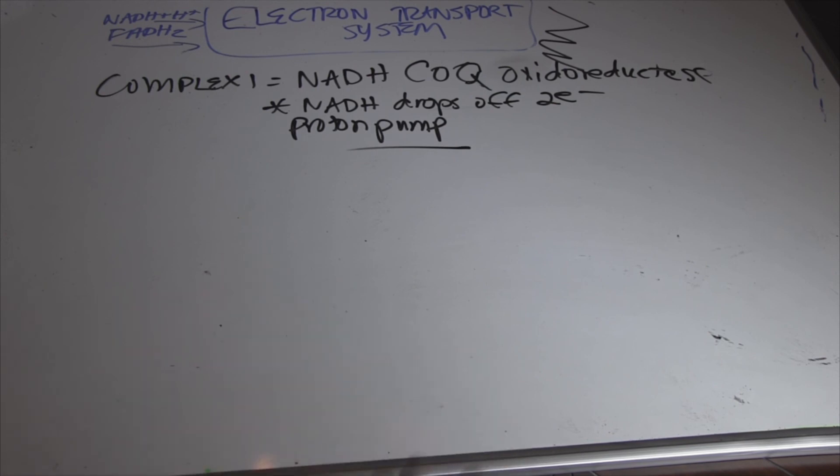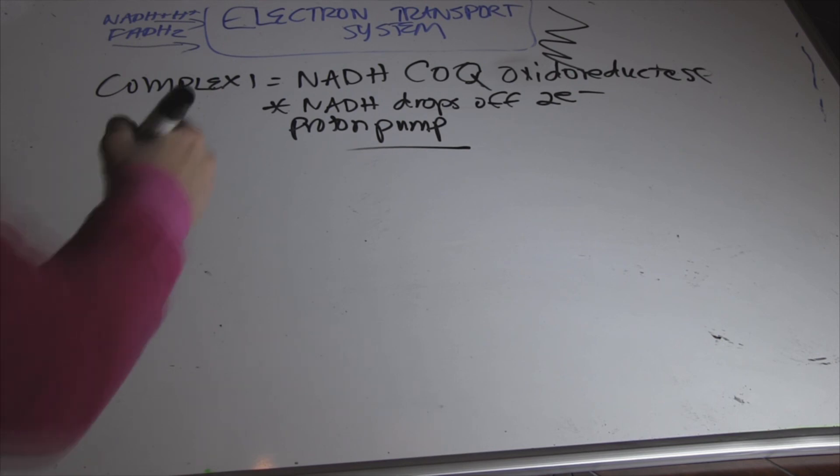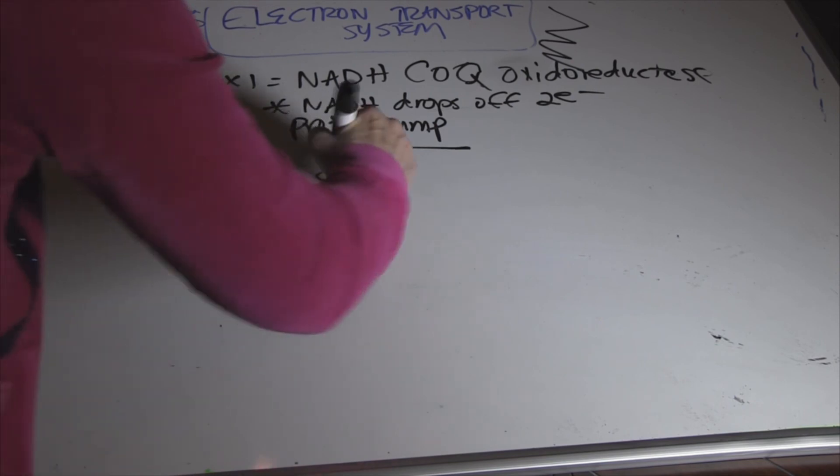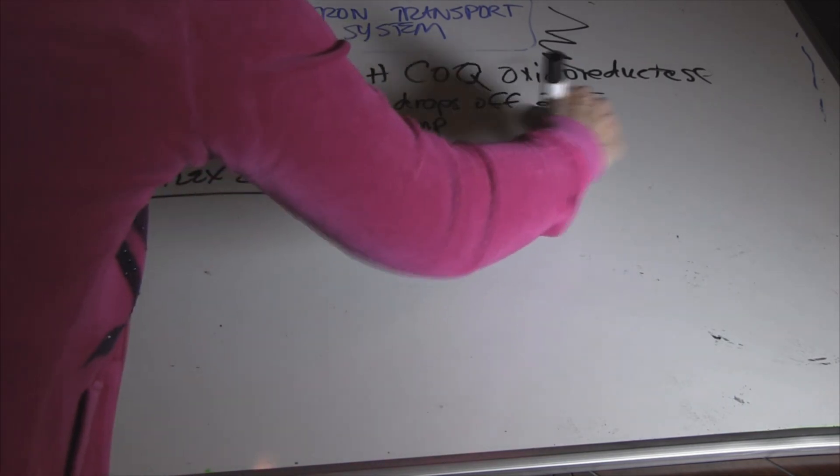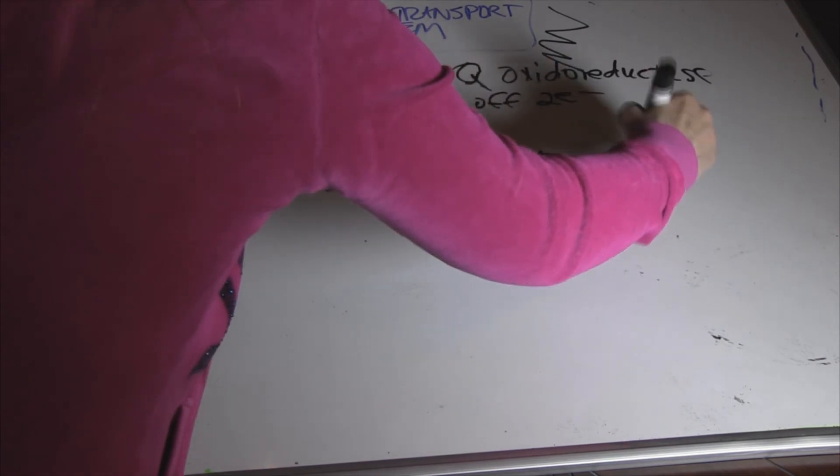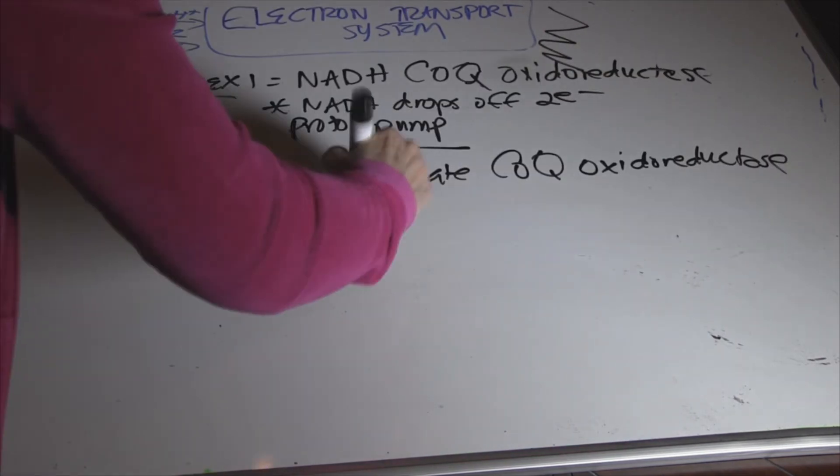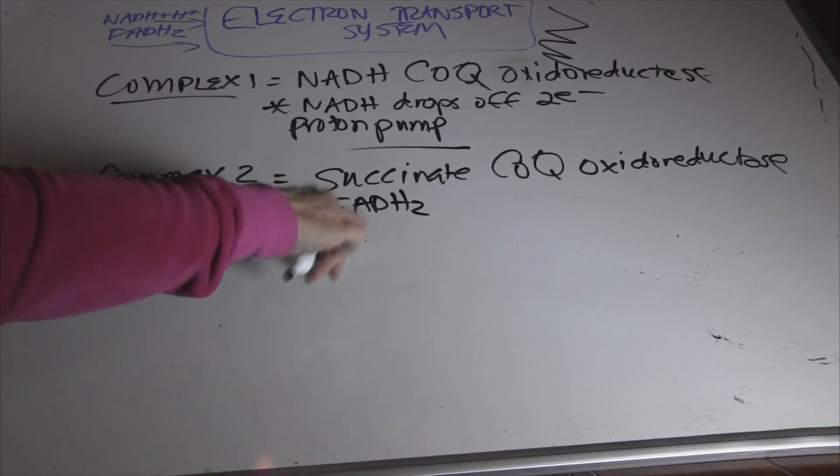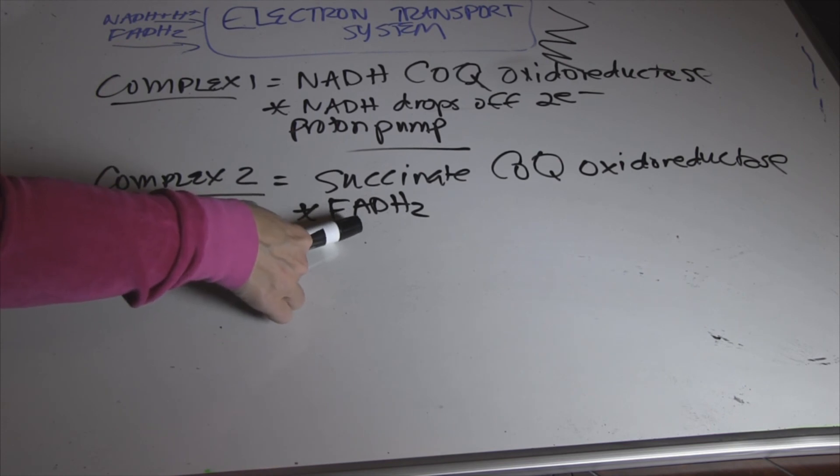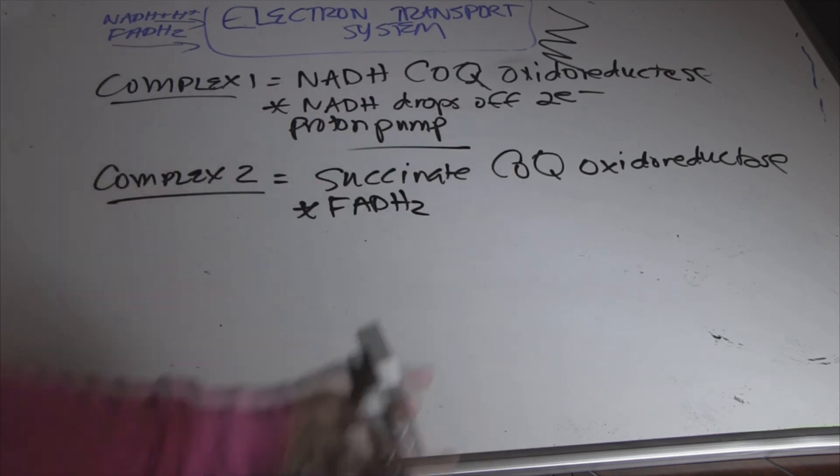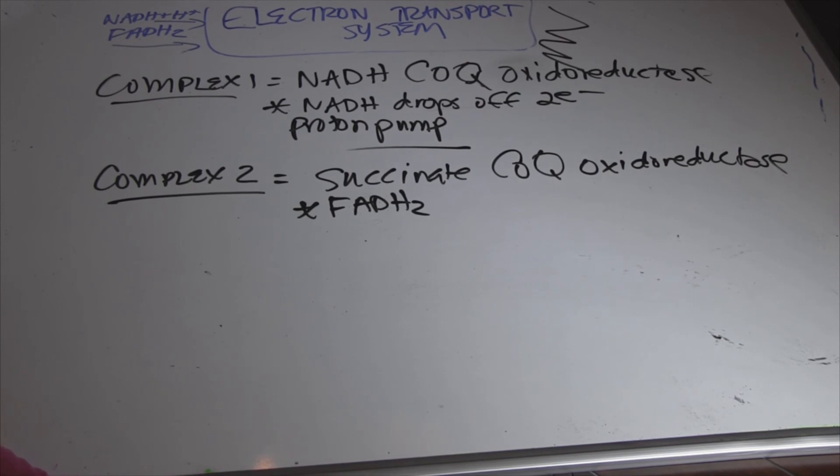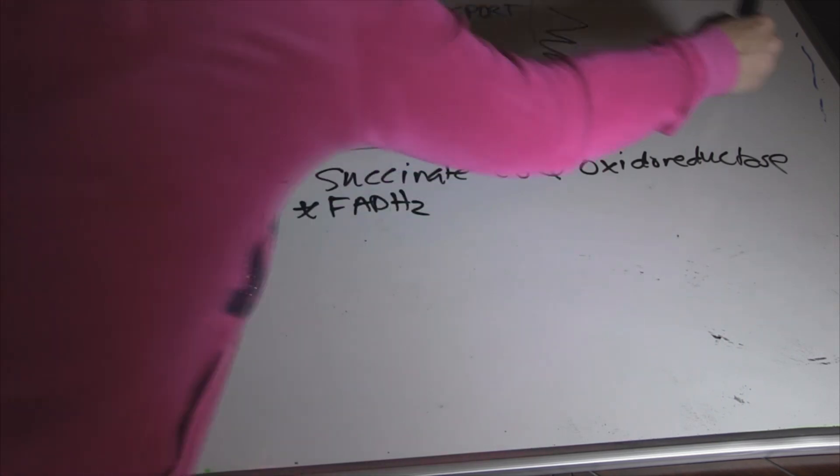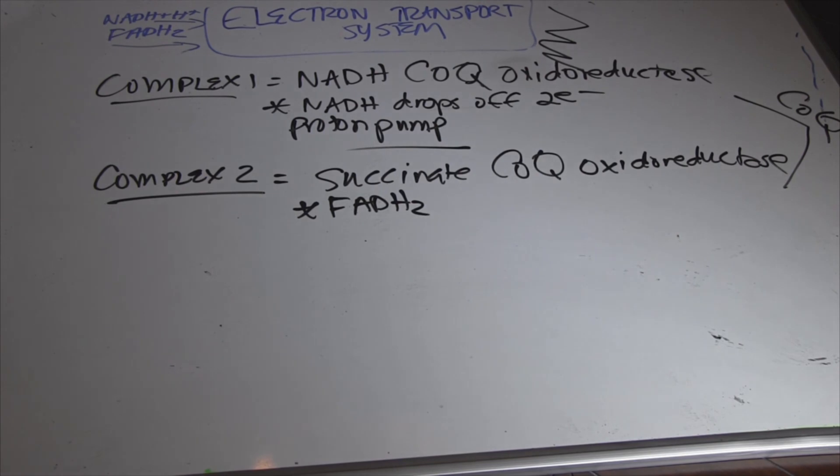This is a proton pump setting up our chemical gradient, electrochemical gradient that we will need for the next set of reactions done by ATP synthase. Complex 2 is known as succinate, coenzyme Q, oxidoreductase. This we had from the citric acid cycle of the reaction succinate to fumarate. We reduced FAD. FAD stays in the inner mitochondrial membrane and simply just hands over the electrons to the iron-sulfur complex, which hands off to coenzyme Q. Both of these reactions give to coenzyme Q, electron carrier.